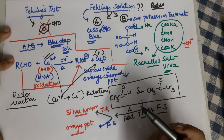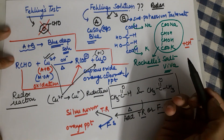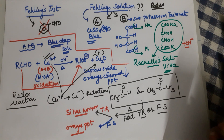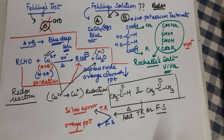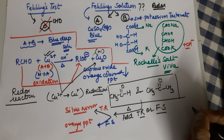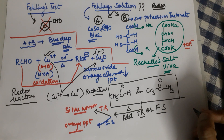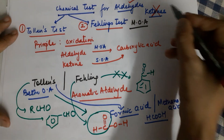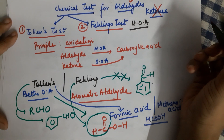With this I conclude the class on Fehling test and Tollens test for aldehydes and ketones. The next videos planned on this topic are: reduction — covering Clemmensen's reduction and Wolff-Kishner reduction — and addition of ammonia derivatives on aldehydes and ketones. So we've finished Tollens and Fehling tests — ideal for aldehydes and not for ketones.